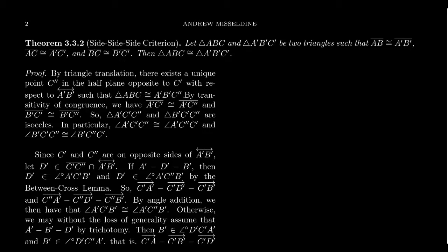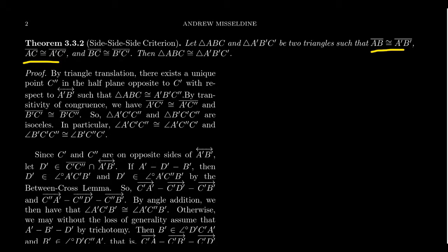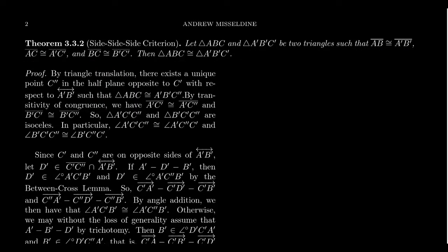In this video, we are going to prove the side-side-side triangle criterion, which says that if you have two triangles ABC and A'B'C', if their corresponding sides are all congruent to each other — that is, AB is congruent to A'B', AC is congruent to A'C', and BC is congruent to B'C' — then the triangles ABC are congruent to A'B'C'. The basic proof is going to follow from the side-angle-side condition or axiom, but we have to do some other things first.